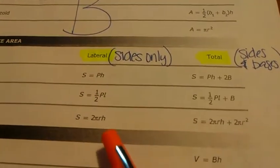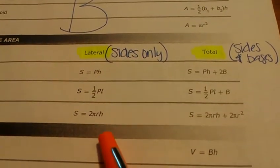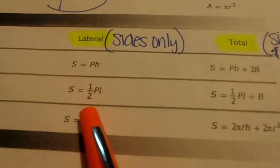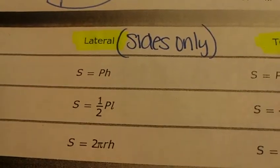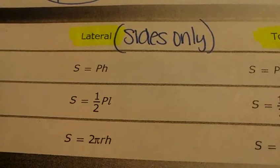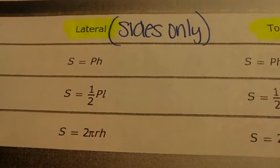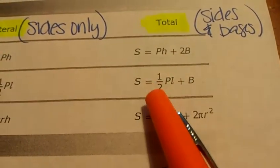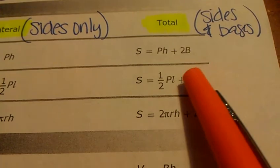So take a look at this formula. The lateral surface area says one-half perimeter of the base, and this little L is in italics. That L stands for your slanted height. And I'll explain more in just a minute. And then we've got our total, which is, of course, the lateral plus capital B area of the base.